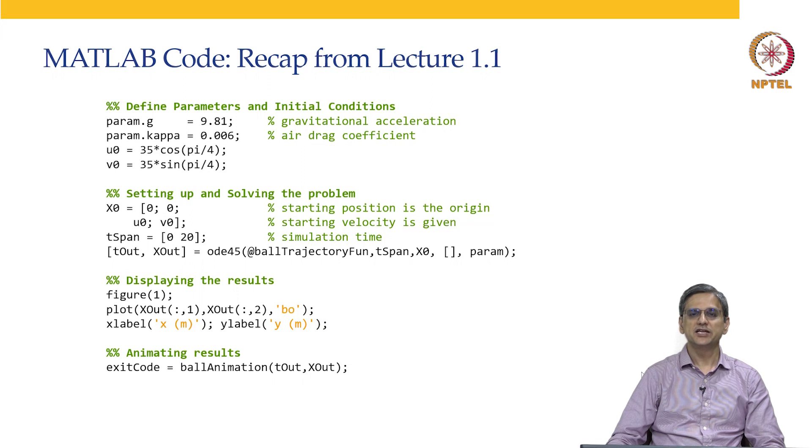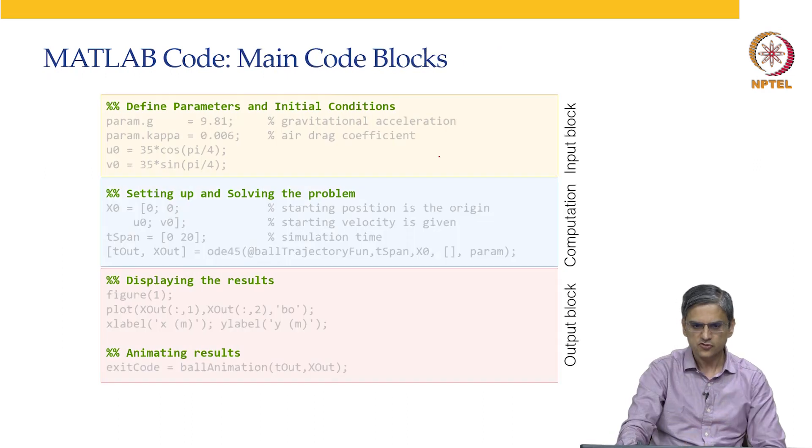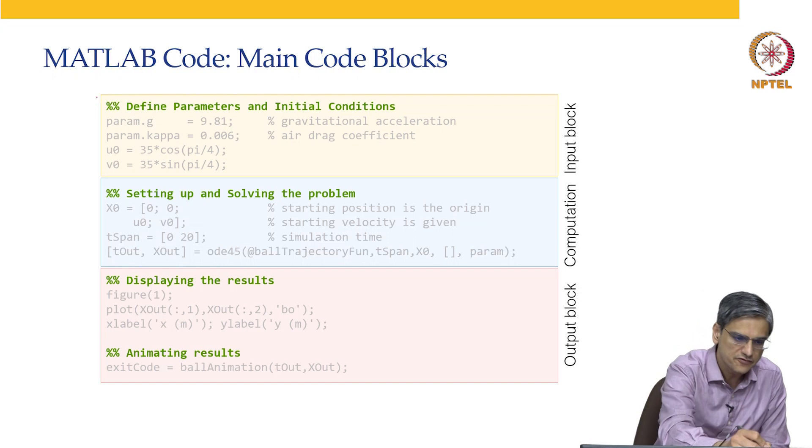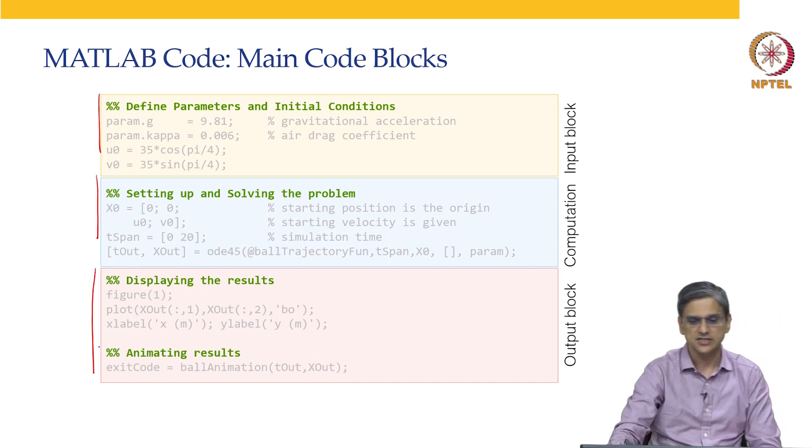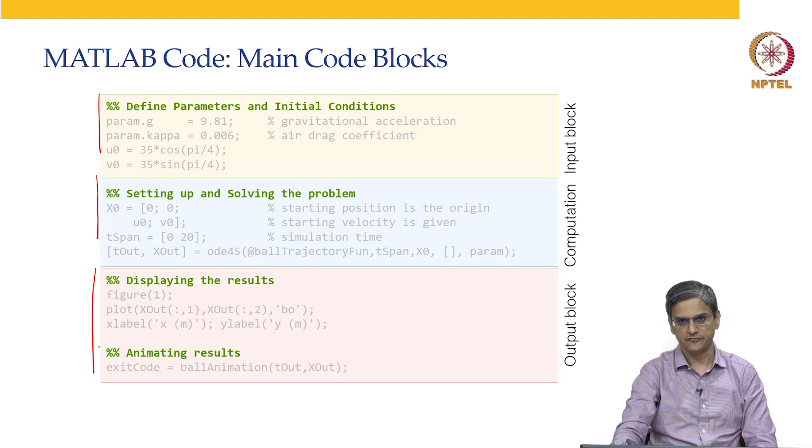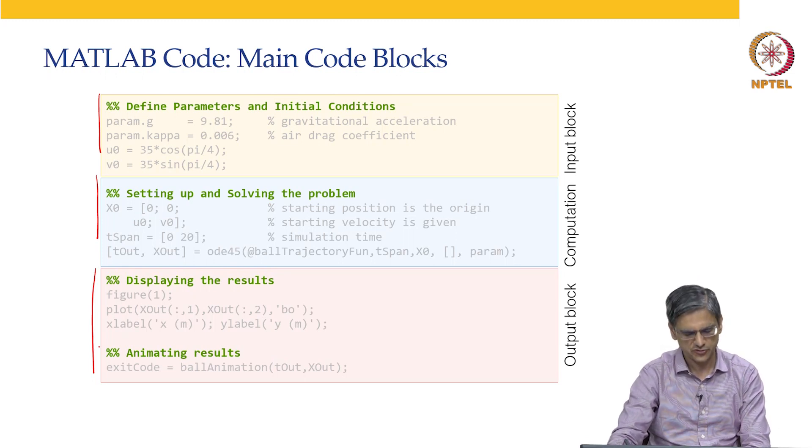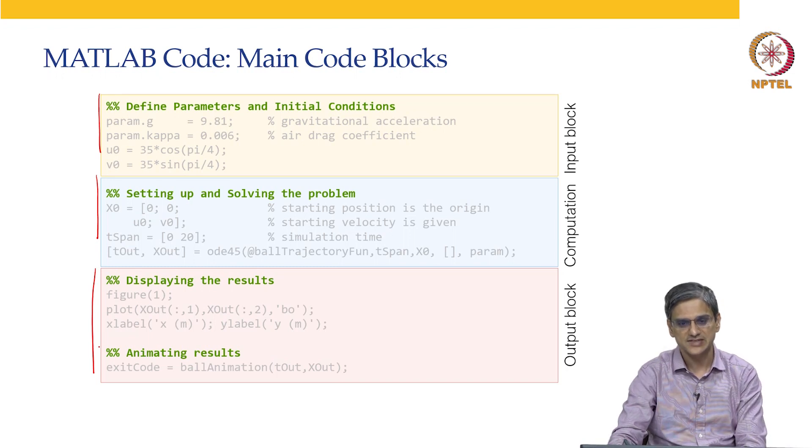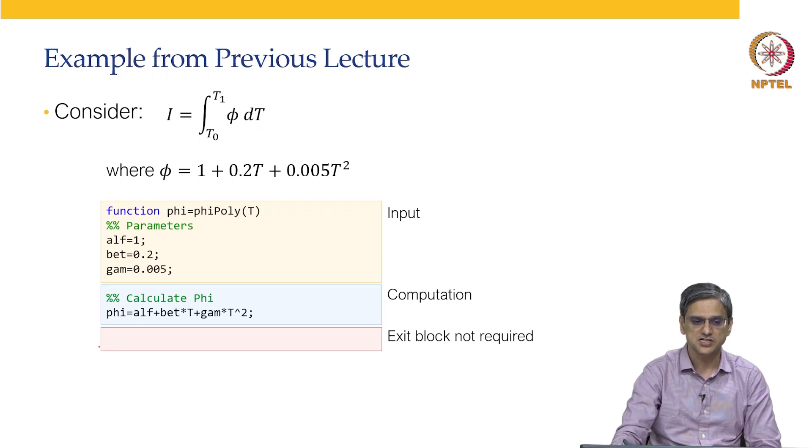Let me recap what we did in the first lecture of previous week. This is an example of code snippet from the example of Dhoni hitting a 6. What are the three blocks? We have the input block, we have the computation block and we have the exit block. Now what does it mean when we write functions in MATLAB? This was an example of a script. But the same idea we can follow in writing functions as well.